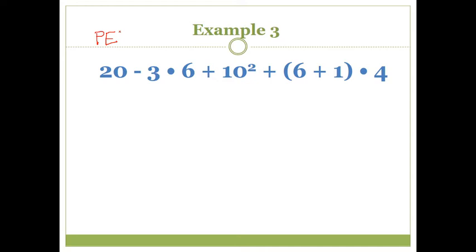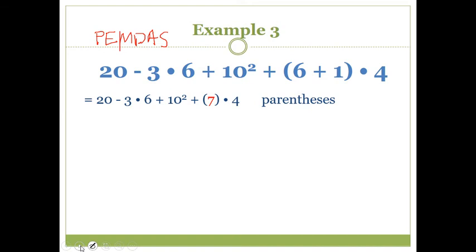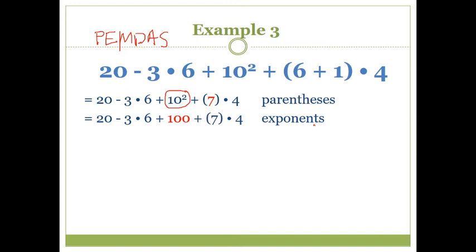I write down my PEMDAS — Please Excuse My Dear Aunt Sally — and go through the expression. According to the order of operations I do parentheses first. I see some parentheses, and inside there's only one operation: add 6 and 1. I replace that with 7 on the next line and bring everything else down. No more parentheses, so I move on to exponents. I do see exponents: 10 squared, which means 10 times 10, is 100. Any more exponents? No, so we're moving on to multiply and divide.